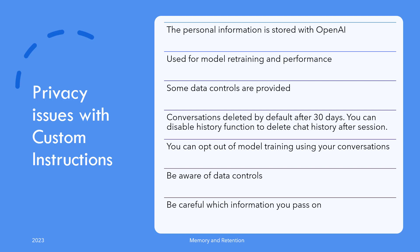Your conversations are used by default opt-in to train the ChatGPT model and are retained for 30 days at the moment. You have the option to opt out of model training using your conversation history via explicit actions on the OpenAI website, and you can even disable history retention via the data controls provided. With specific reference to the two fields in custom instructions where you provide information about yourself, you are doing that with the intent of getting better responses, but you are also providing personal information online which can be used in ways you don't anticipate. So it's best to be careful and selective.